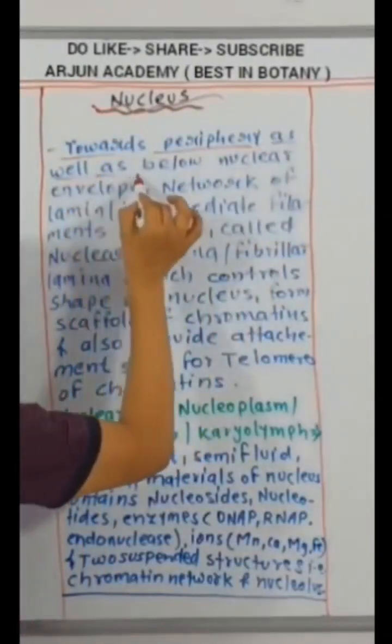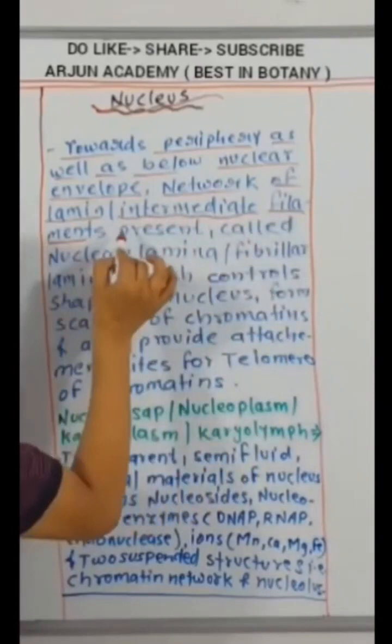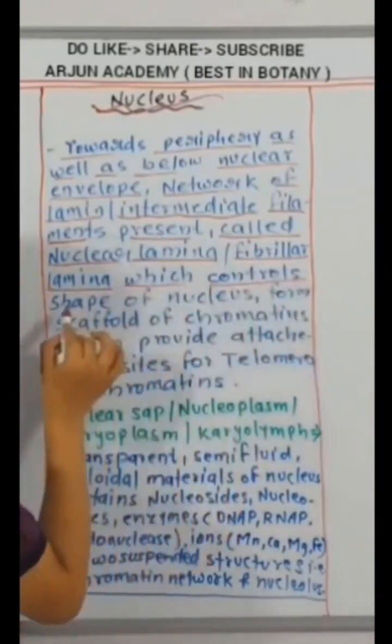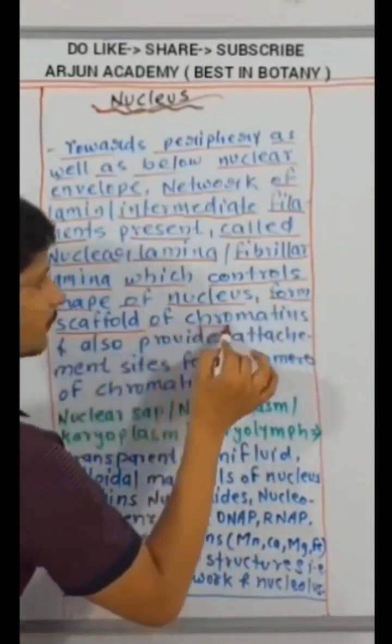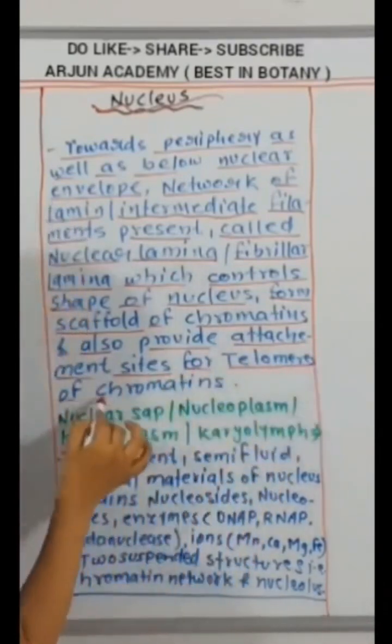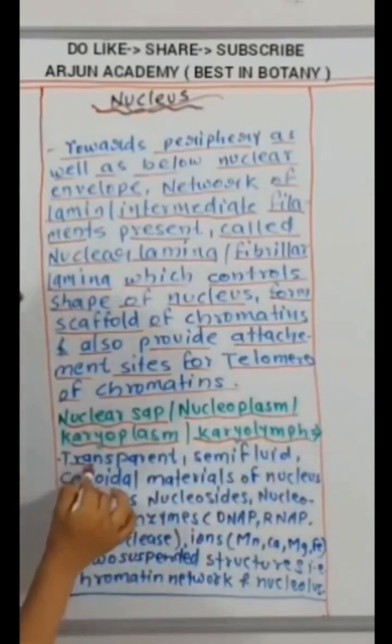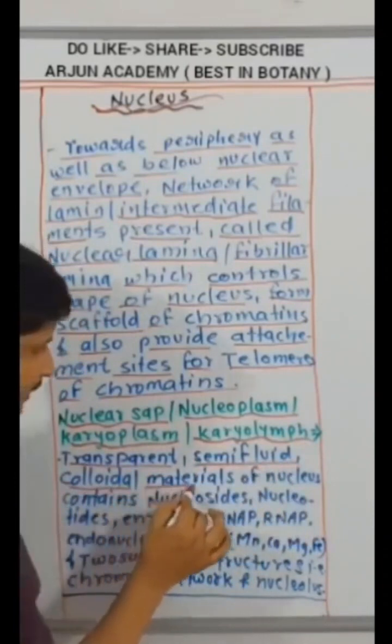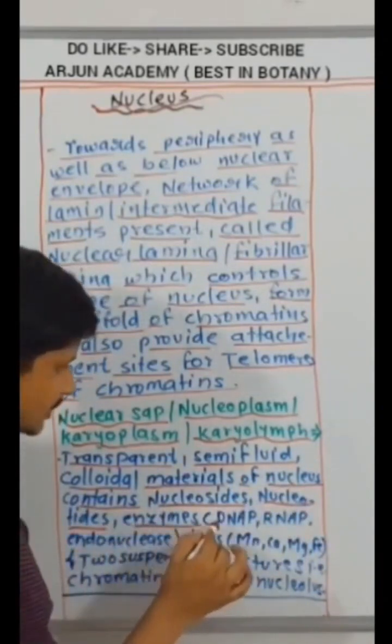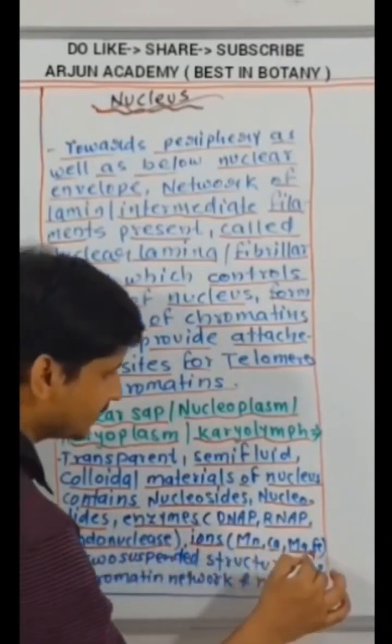Towards periphery as well as below nuclear envelope, network of lamins or intermediate filaments present, called nuclear lamina or fibrillar lamina, which controls shape of nucleus form, scaffold of chromatin and also provide attachment sites for telomeres of chromatin. Nuclear sap, nucleoplasm, karyoplasm, karyolymph. Transparent semi-fluid colloidal materials of nucleus contains nucleosides, nucleotides, enzymes like DNA polymerase, RNA polymerase, endonuclease, ions like magnesium, iron, etc. and two suspended structures that is chromatin network and nucleolus.